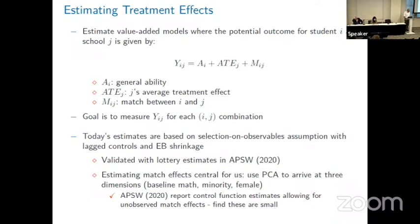Estimating the dimensionality of match effects is central to our exercise. We use principal components analysis to arrive at three dimensions: essentially baseline math, minority status, and female. What we're saying is that attending a school — if I am a minority, female, or have low baseline math scores — could have different effects for me than for someone with different characteristics. That's the match effect.